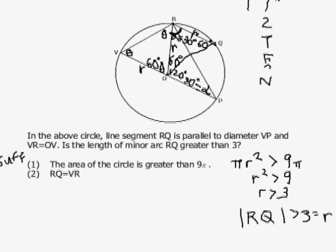In this data sufficiency question, the answer is number 1. Number 1 by itself is sufficient but number 2 is not. This is a good question because it combines circles and triangles and parallel lines, something that the most difficult geometry questions will do.